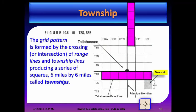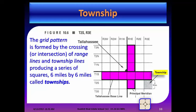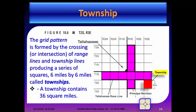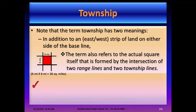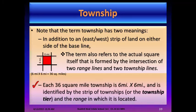The grid pattern is formed by the crossing of range lines and township lines, producing a series of squares 6 miles by 6 miles called townships. Note that the term township has two meanings: it refers to an east-west strip of land on either side of the baseline, and also to the actual square formed by the intersection of two range lines and two township lines. Each township is identified by its township tier and the range in which it is located.